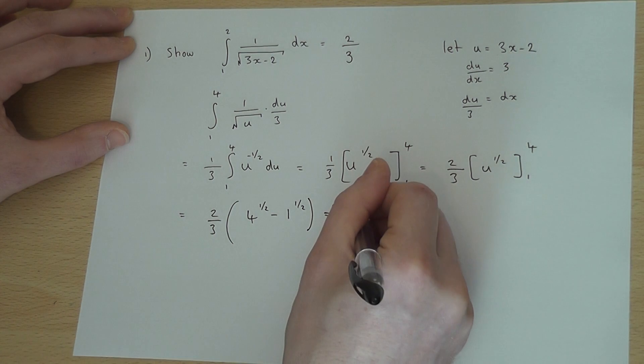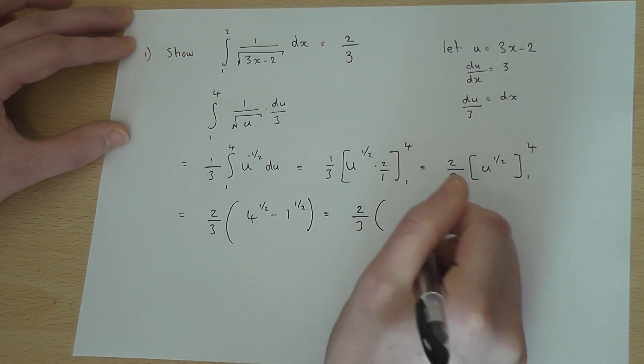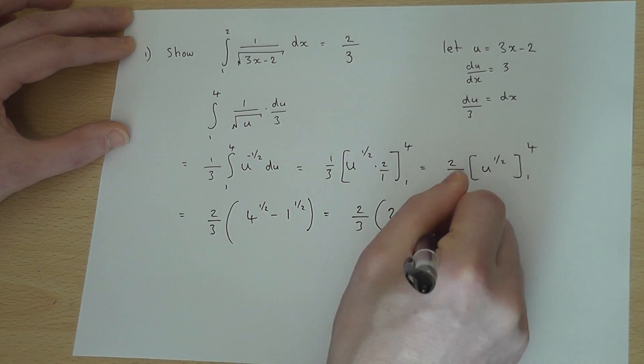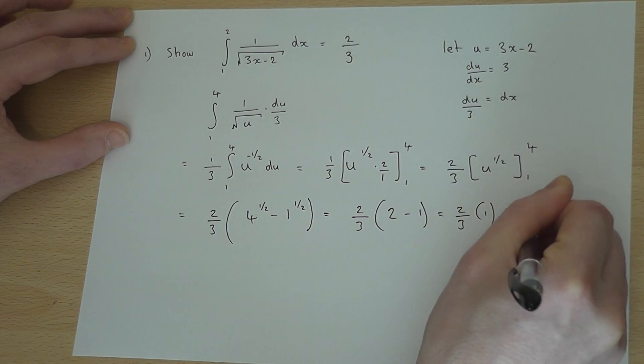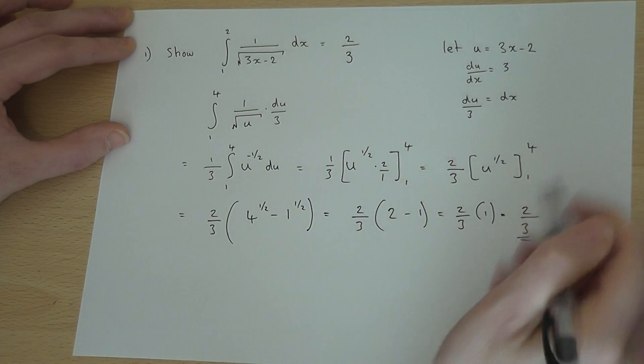Now, 1 half just means square root, so it's 2 thirds. 2, take away 1, which is 2 thirds of 1, which is 2 thirds, as required.